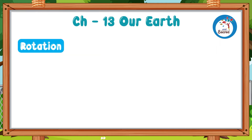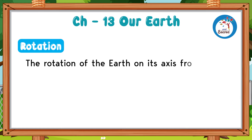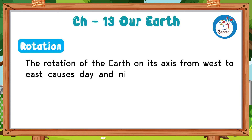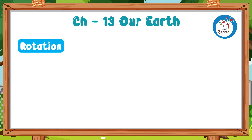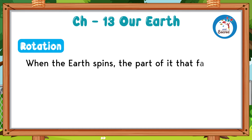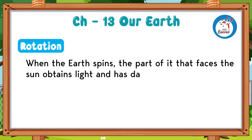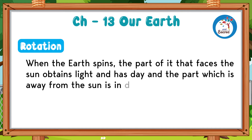Rotation. The rotation of the Earth on its axis from west to east causes day and night. It completes one rotation in 24 hours. When the Earth spins, the part facing the Sun has day, and the part away from the Sun is in darkness and has night.